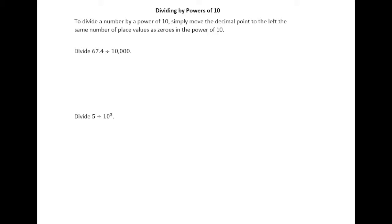To divide a number by a power of 10 simply move the decimal point to the left, the same number of place values as zeros in the power of 10.